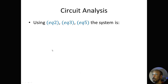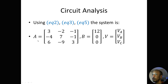Using equations 2, 3, and 5, the system is: A matrix equals [3, negative 2, negative 1; negative 4, 7, negative 1; 6, negative 9, 3]. The B vector equals [12, 0, 0], and the V vector equals [VA, VB, VC].